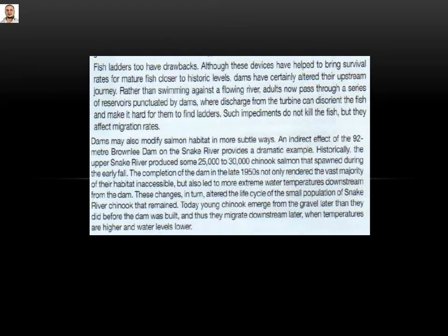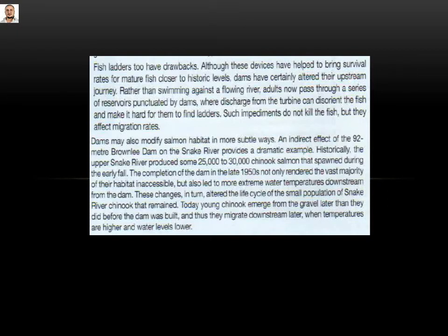Dams may also modify salmon habitat in more subtle ways. An indirect effect of the 92-meter Browley Dam on the Snake River provides a dramatic example. Historically, the upper Snake River produced some 25,000 to 30,000 chinook salmon that spawned during the yearly fall. The completion of the dam in the late 1950s not only rendered the vast majority of their habitat inaccessible, but also led to more extreme water temperatures downstream from the dam. These changes in turn altered the life cycle of the small population of Snake River chinook that remained. Chinook emerged from the gravel later than they did before the dam was built, and thus they migrate downstream later, when temperatures are higher and water levels lower.